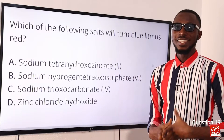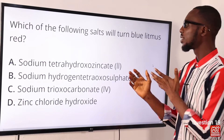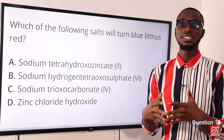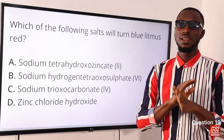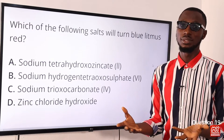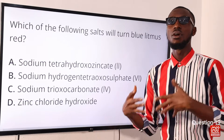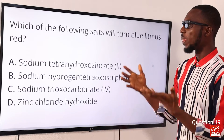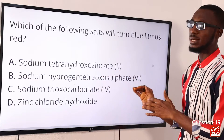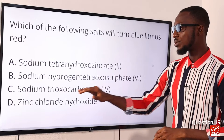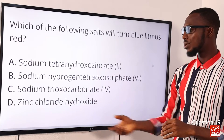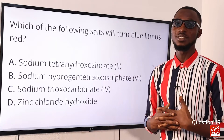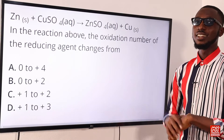Question 19: Which of the following salts turns blue litmus red? That is talking about an acidic property — an acidic salt is one where the replaceable hydrogen ions are not completely replaced; they are only partially replaced by a metallic ion. There is insufficient metallic ion to completely remove the replaceable hydrogen ions, so it still has acidic properties. An example is sodium hydrogen tetraoxosulfate(VI). The correct option is option B.